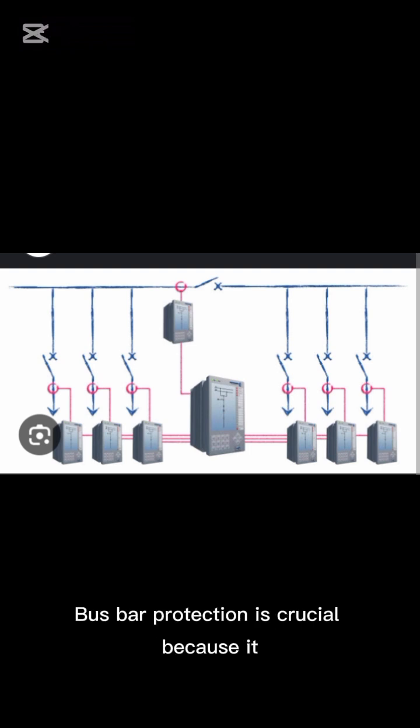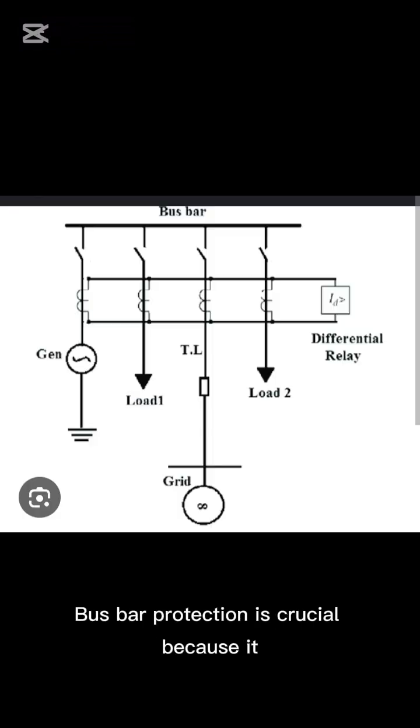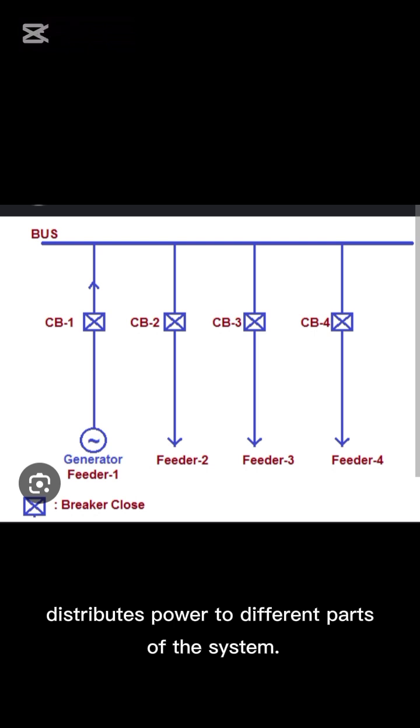Conclusion. Bus bar protection is crucial because it distributes power to different parts of the system. If a bus bar fails, it can cause major disruptions in a power plant or substation. Therefore, differential protection and overcurrent protection are commonly used to safeguard bus bars from faults.